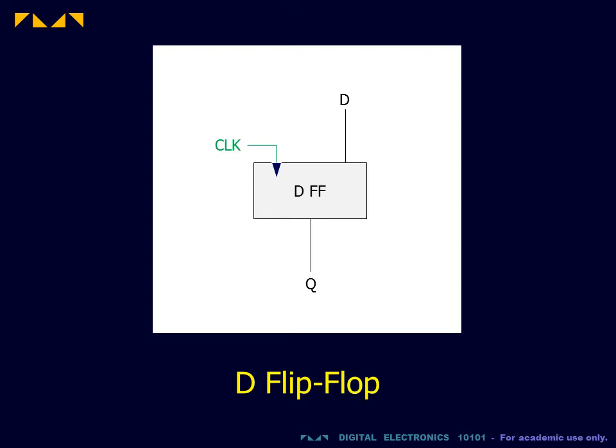The simplest register is the D flip-flop. This flip-flop stores a single bit of data when triggered by the clock signal. Multi-bit registers can be constructed from D flip-flops and basic gates.